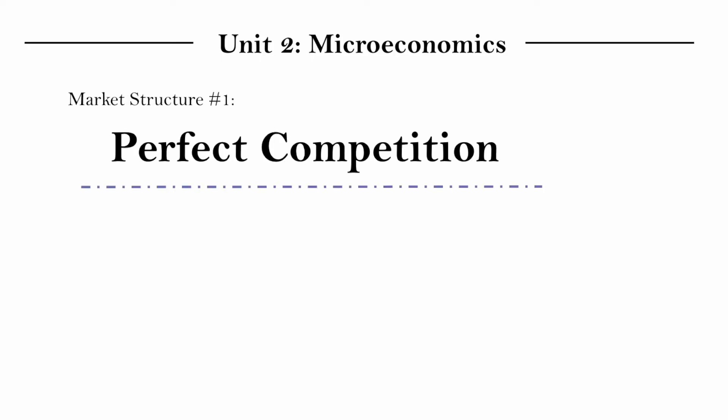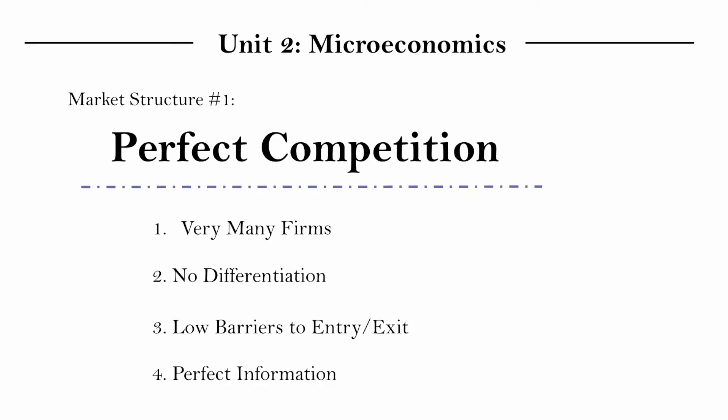In summary, a perfectly competitive market structure has very many firms, no differentiation of goods, low barriers to entry and exit, as well as perfect information. You do need to memorize these for your exams, and the memory trick is to always ask what leads to the most competition. In the next video, we'll cover how to draw and explain the perfect competition diagram, which is also required for your exams.